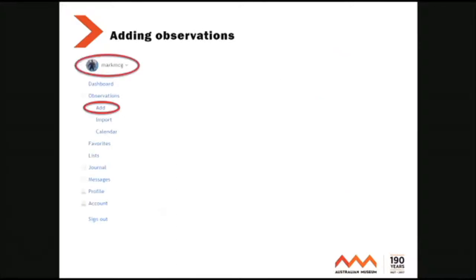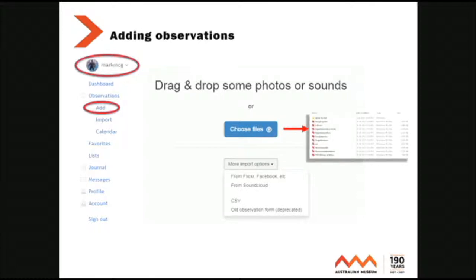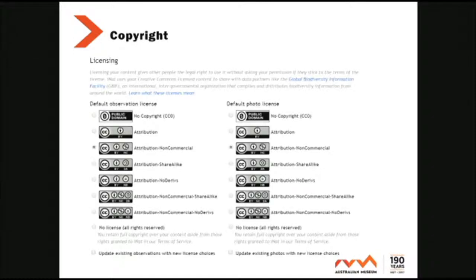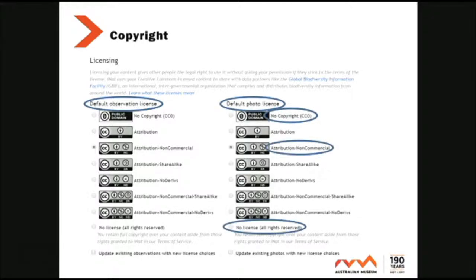There's another way of doing it from your dashboard where you can add and choose files from your computer. So if you go for a dive or you've been out fishing and you've caught a range of different fish, you can upload all those in one go. You can also link your Flickr account and Facebook. And the big question that lots of people ask when dealing with images is copyright. Well, you can set your own copyright for the observation itself or for the photograph, and you can set all kinds of different levels from no copyright through to all rights reserved.